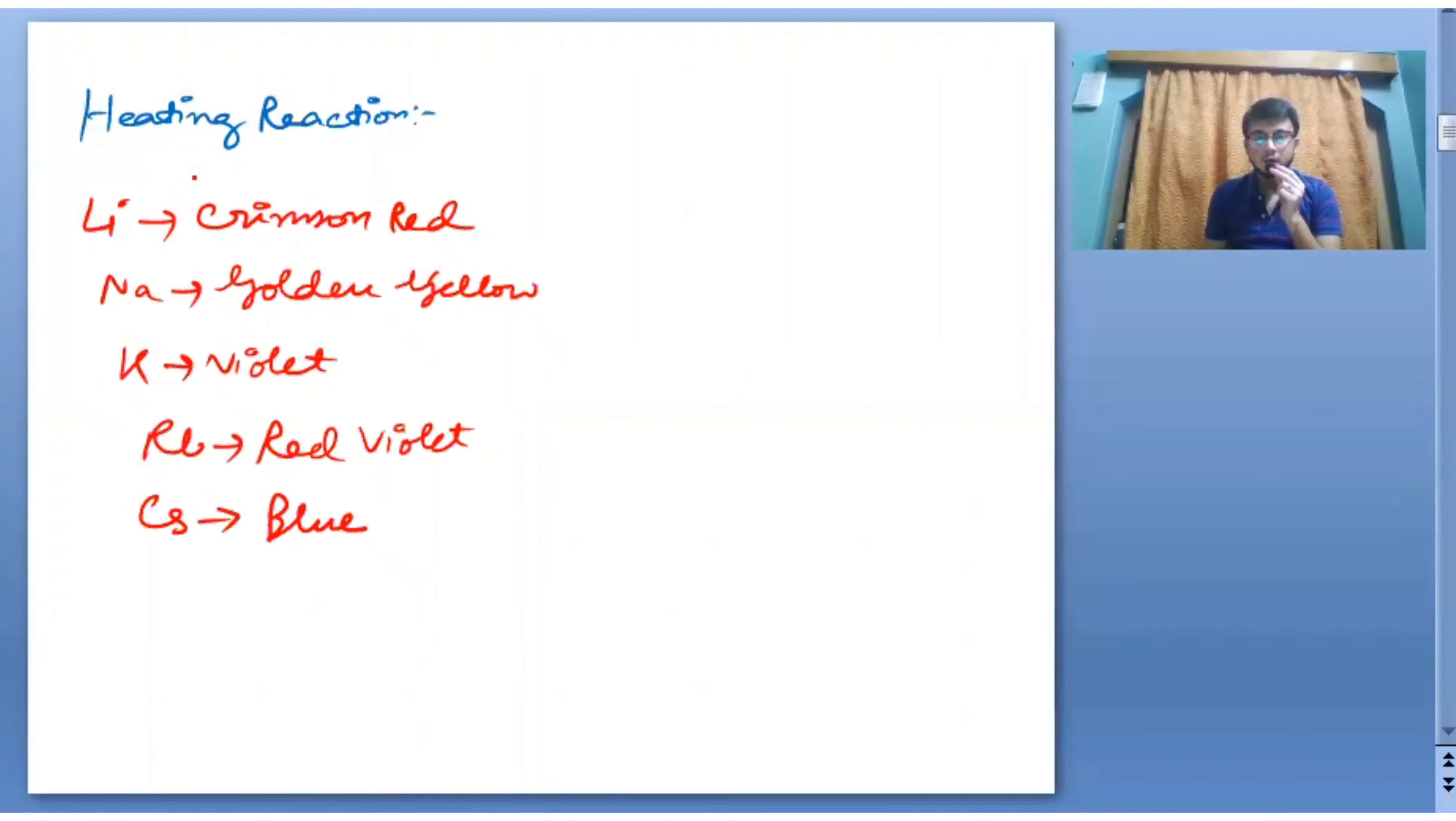Now there is a heating reaction. If we heat these metals in a flame torch or gas burner, for Li it will be crimson red, for Na it will be golden yellow, for potassium violet, for Rb red violet, and for Cs blue. Please remember these colors very carefully because they are often asked.